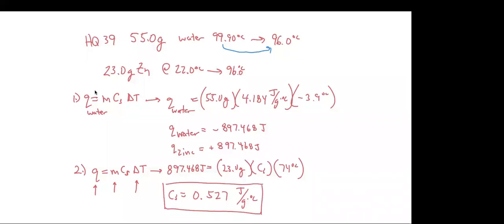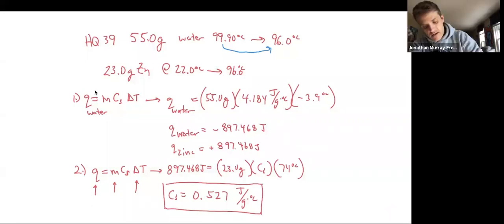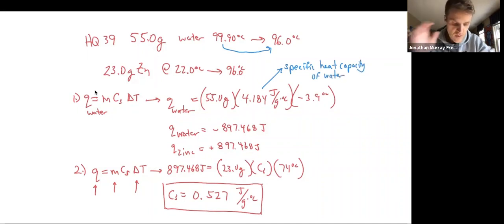Where did you get the 4.184 joules over grams? That is the specific heat capacity of water. In the other question they gave us 4.18, but it's 4.184.